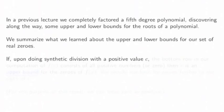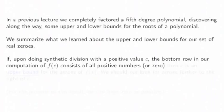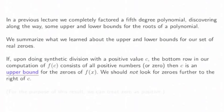If, upon doing synthetic division with a positive number c, the bottom row in our computation of f(c) consists of all positive numbers, then that c is an upper bound for the zeros of f(x). We should not look further to the right on the x-axis for other zeros.